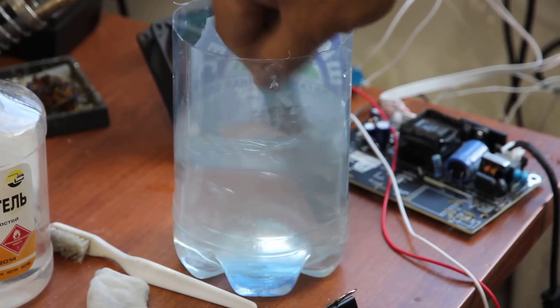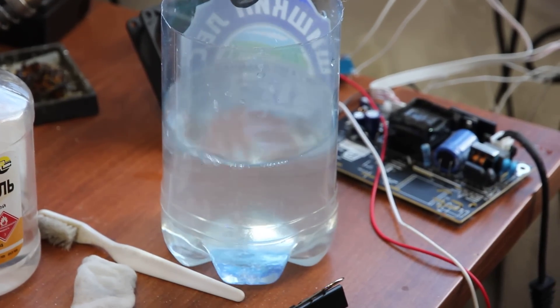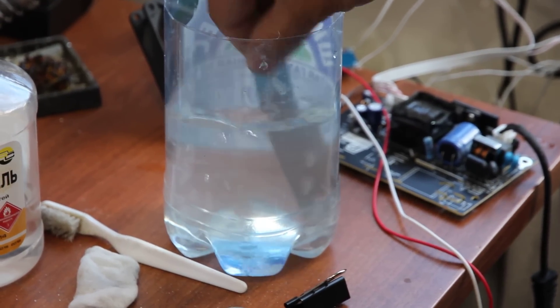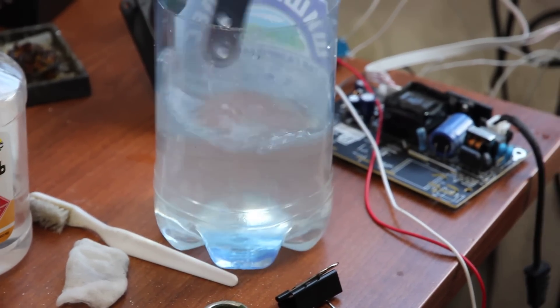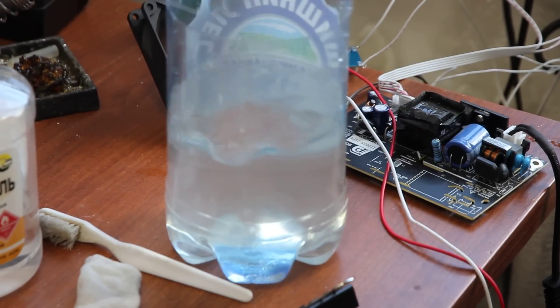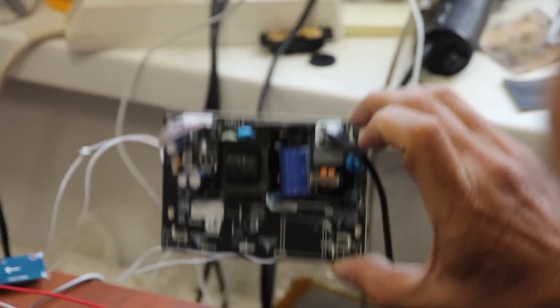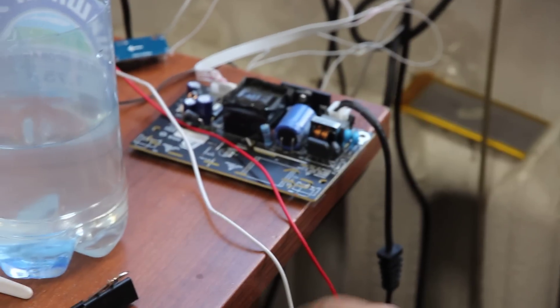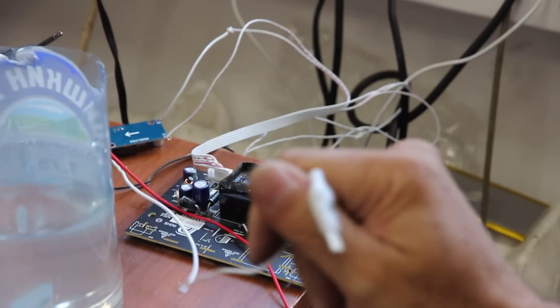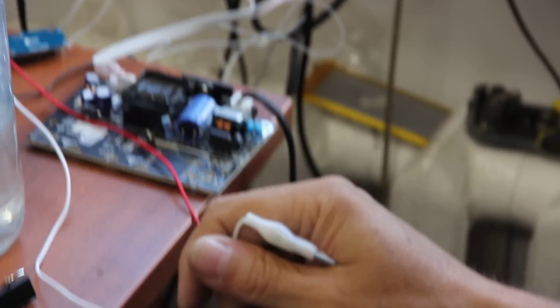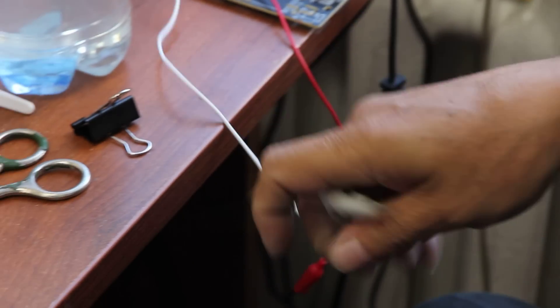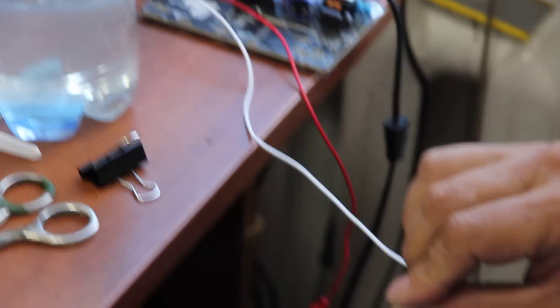Now, this is a power adapter from an average TV set. We take the white wire and plug it to the electrode. We made our own electrode and we put it into the water.